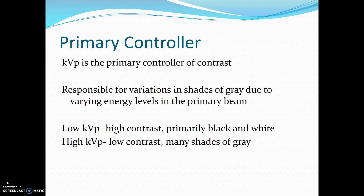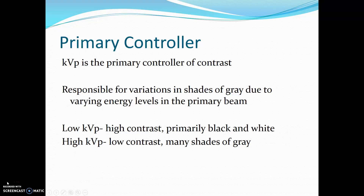KVP is the primary controller of contrast. It is responsible for variations in the shades of gray due to varying energy levels in the primary beam. Low KVP creates high contrast images that are primarily black and white. High KVP creates low contrast images that have many shades of gray.